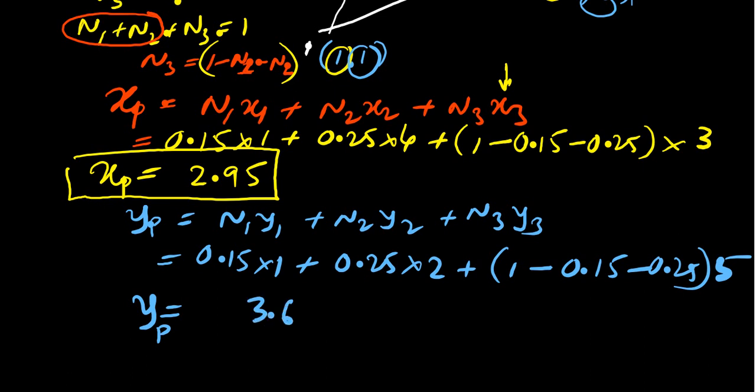Okay. So, this is the method to calculate the coordinates for x and y for the point P. Okay. So, thank you. Thank you.